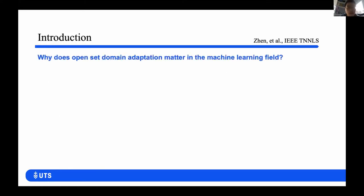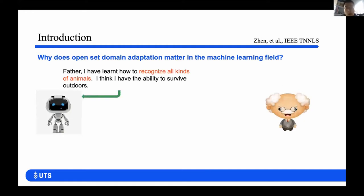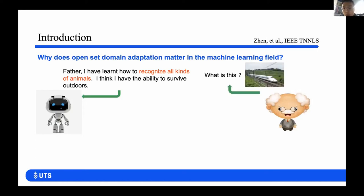So the first question is: why does open-set domain adaptation matter in the machine learning field? I will give an example. There's a robot and a scientist. The robot has been taught how to classify animals. One day, the robot asked the scientist if it had the ability to go outside and survive. The scientists tested the robot and asked the robot a question: What's this? The robot answered: it's a snake. However, the answer was not right.